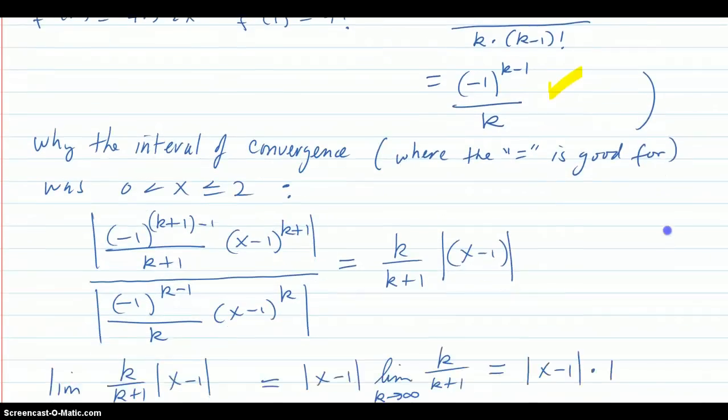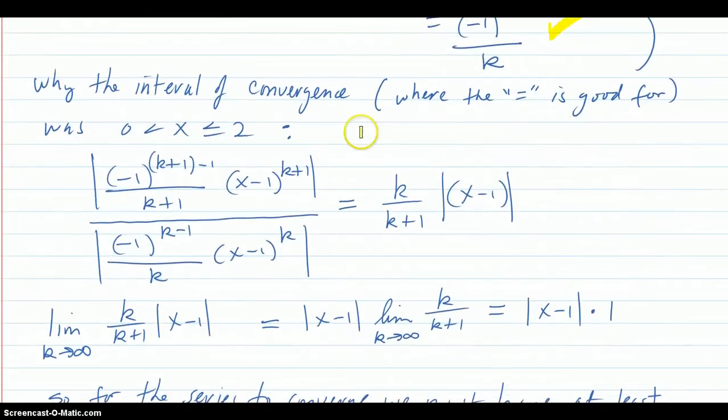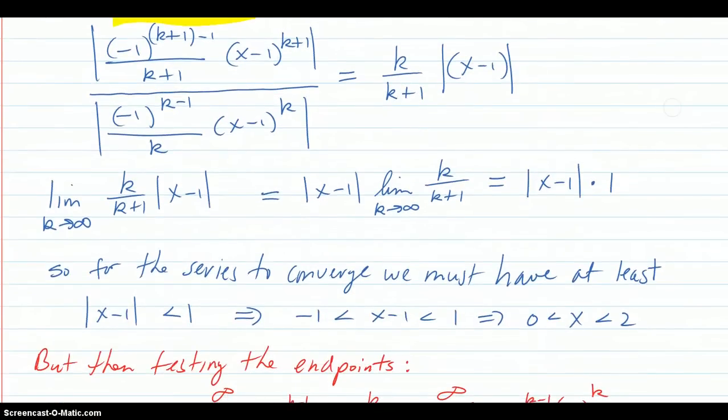Then, why the interval of convergence is this was because we did the ratio test. And we got this for the preliminary. And then we tested the endpoints.